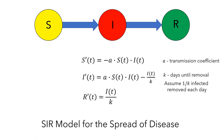In order to use this model to make predictions, you would need to have information about the transmission coefficient, the time it takes to recover, and an initial number of people who are in each group.